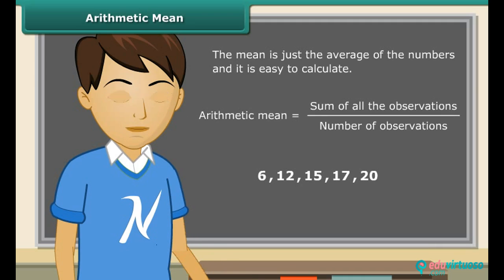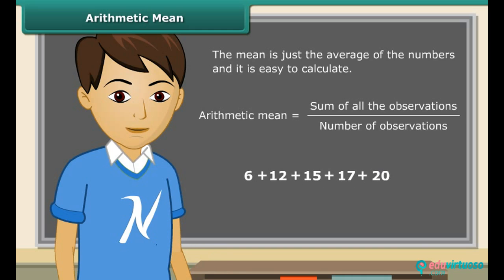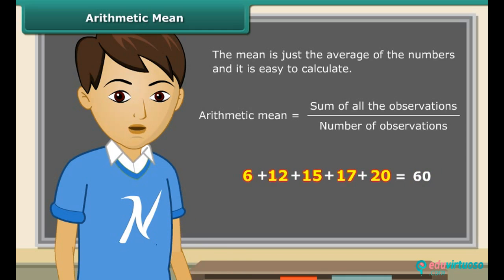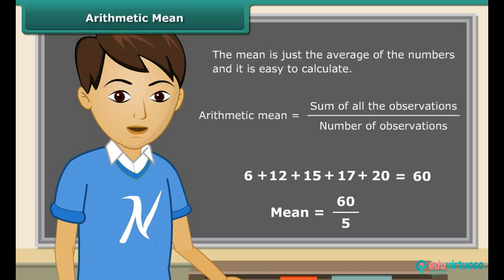Let us calculate the mean of these numbers. Add up the numbers first. The sum of these numbers is 60. There are total 5 numbers. So, the mean is equal to 60 divided by 5, which equals 12.